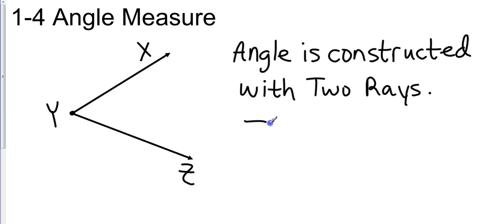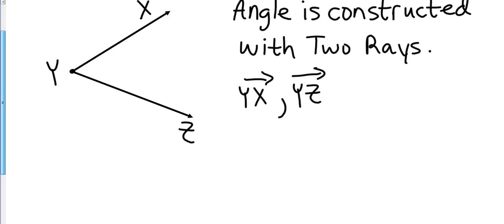So the rays are y, x and labeling is very important on this one because it is the x side that extends forever. So y has to be first. And then that would make the second ray y, z. And they intersect at point y, that's where the endpoint is. And that is called the vertex. I was taught and always remember that the vertex is where the angle makes a V. Vertex. So this area right here is where it comes in and makes a V.